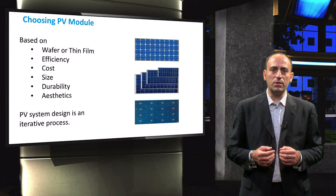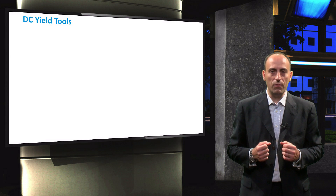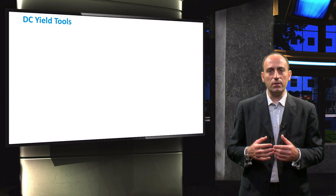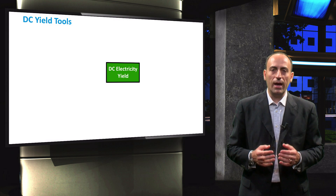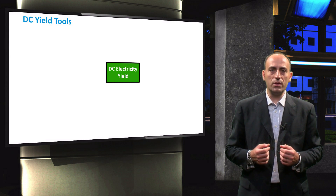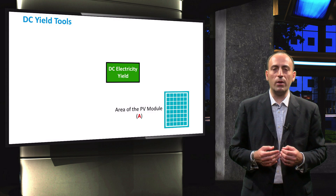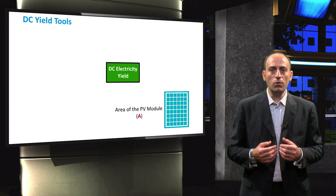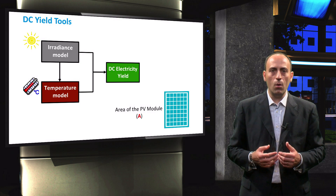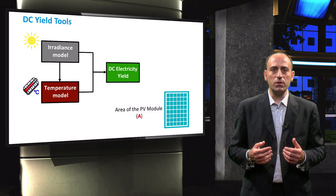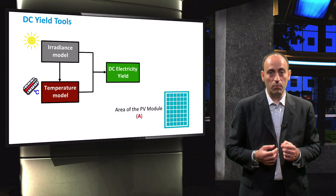PV system design is by nature an iterative process. We now have chosen a certain type of PV module. The next step is the detailed design approach in finding the DC energy yield of this module. At this stage of the design process, the calculations are carried out only for a single PV module, for which we will need the module area A. In order to find the DC yield, we have to apply an irradiance model and a temperature model. With the output from these two models, we can simulate the DC electricity yield and the other electrical parameters of the PV module.